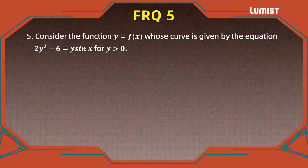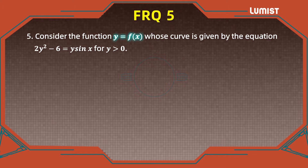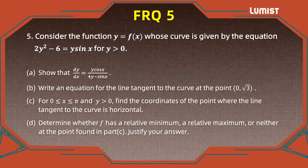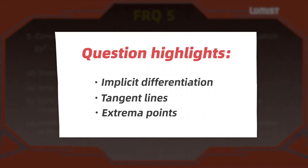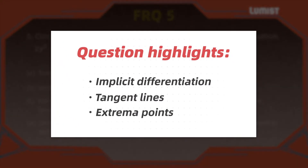Hello, welcome to Loomist. In this video, we're going to be solving the fifth free response question for the 2021 AP Calculus AB test. As you can see in this question, we're given a function f of x, but it is defined using an equation — defined implicitly. We're told that y is always positive. We have to solve four parts, and this question involves implicit differentiation, the concept of tangent lines, and extrema value points.